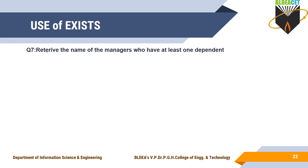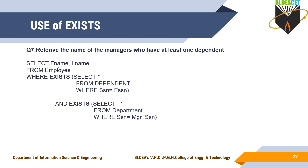Next, one more example: retrieve the name of the managers who have at least one dependent. Earlier you retrieved employees with at least one dependent; now you want managers. This query uses the employee table and the dependent table — EXISTS checks if that employee has a dependent, and the second inner query checks whether that employee is a manager.